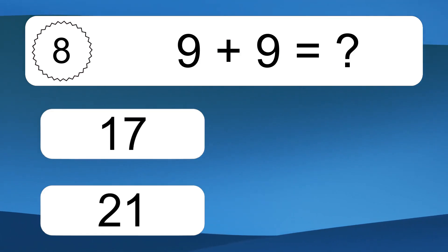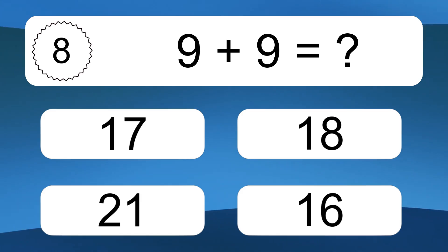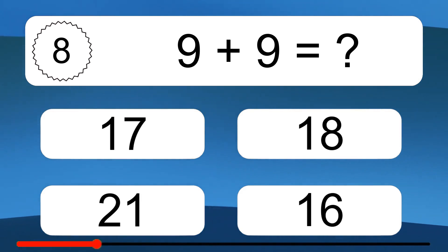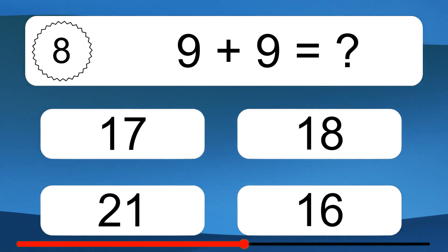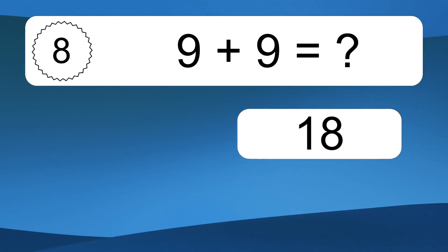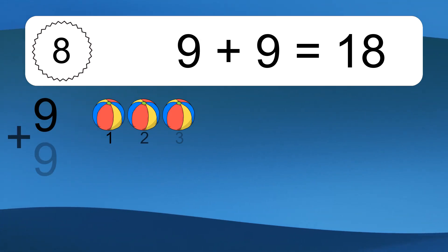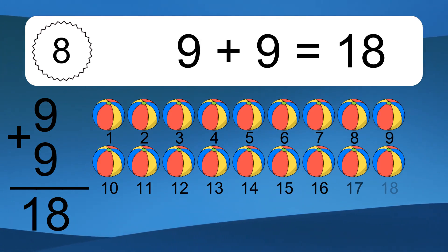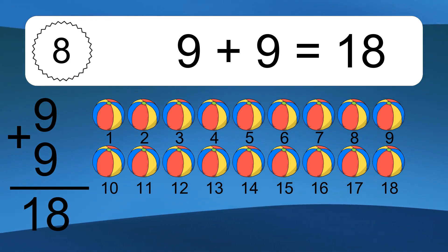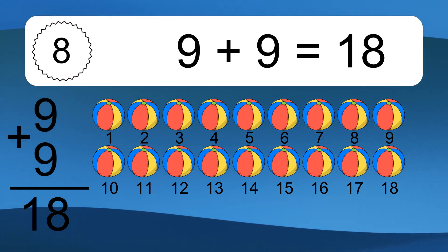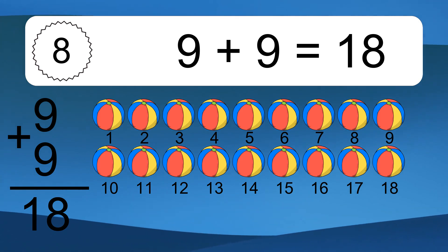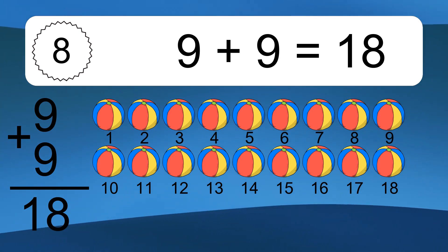9 plus 9 equals what? 9 plus 9 equals 18. Let's count it. 1, 2, 3, 4, 5, 6, 7, 8, 9, 10, 11, 12, 13, 14, 15, 16, 17, 18.